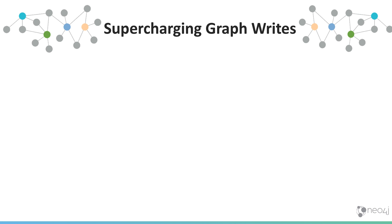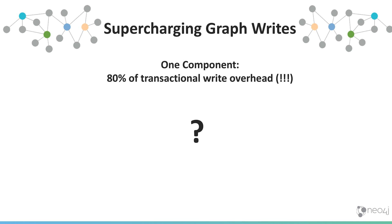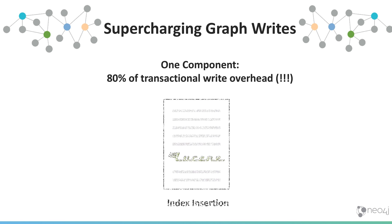Write performance is also quite important. In our ongoing quest to take writes to the next level, we've been hammering away at one component that incurs roughly 80% of all overhead when writing to a graph. What component it is may not be so obvious — it's indexes. Lucene is fantastic at certain things; it's awesome at full text, for instance. But it turns out to be not so good for ACID writes with individually indexed fields.